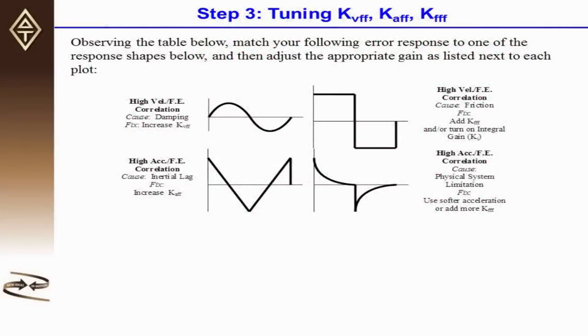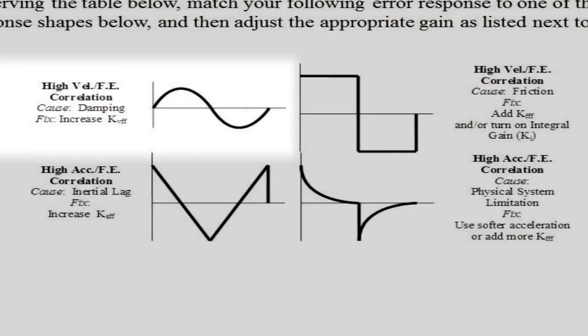Let's look at some example cases. The top left diagram shows a high correlation between the following error and the commanded velocity. That is, they are essentially the same shape. This is due to damping in the system. To compensate for this, increase kVFF.